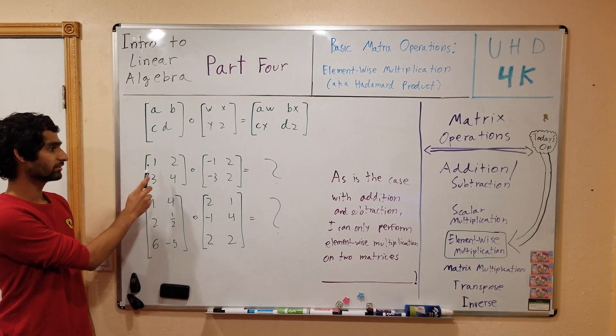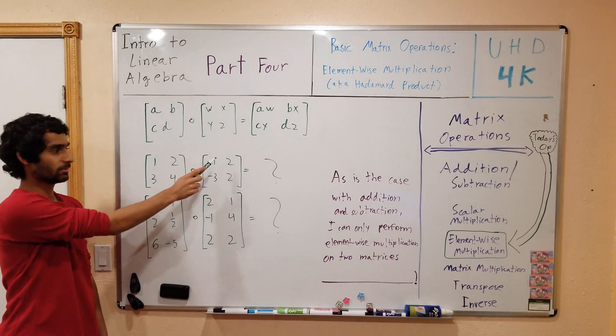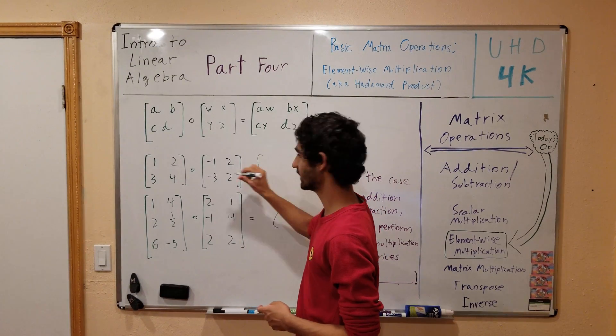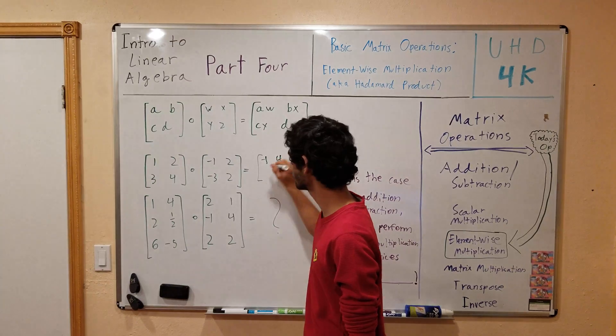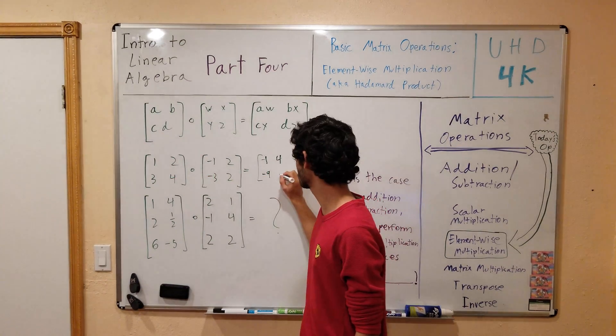The Hadamard product of these two matrices, [1, 2, 3, 4] and [-1, 2, -3, 2], is as follows: 1 times -1 is -1, 2 times 2 is 4, 3 times -3 is -9, and 4 times 2 is 8.